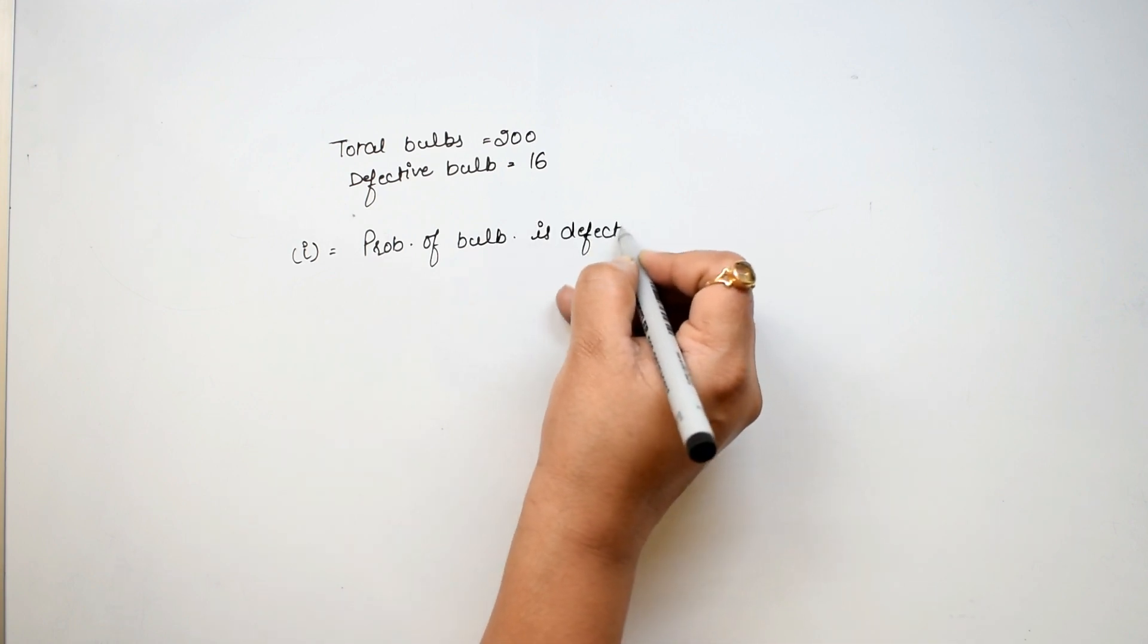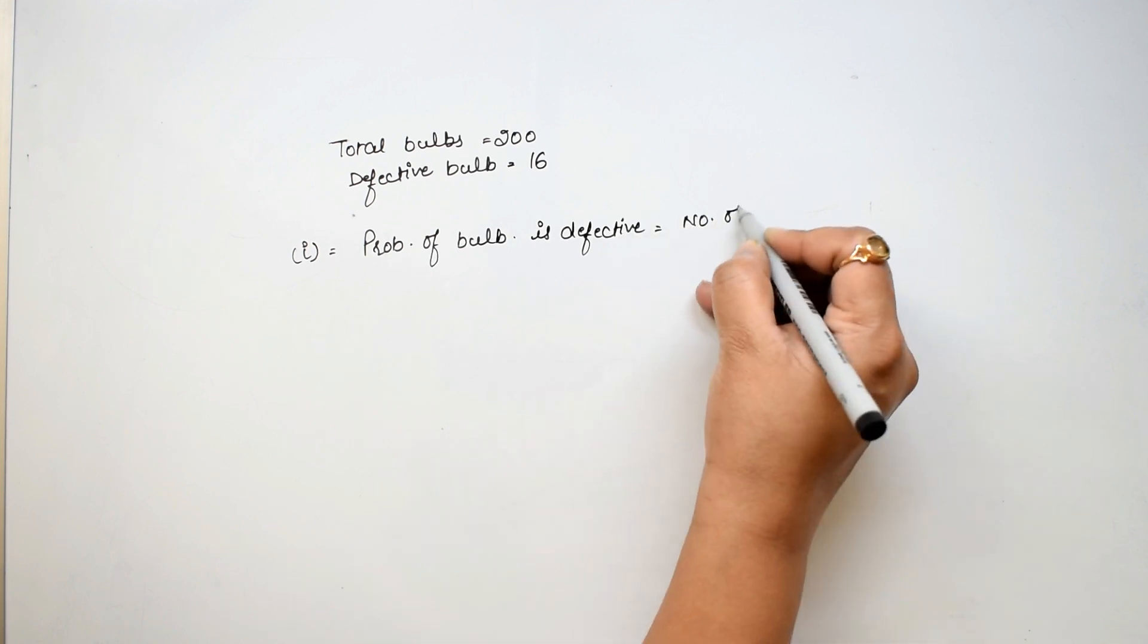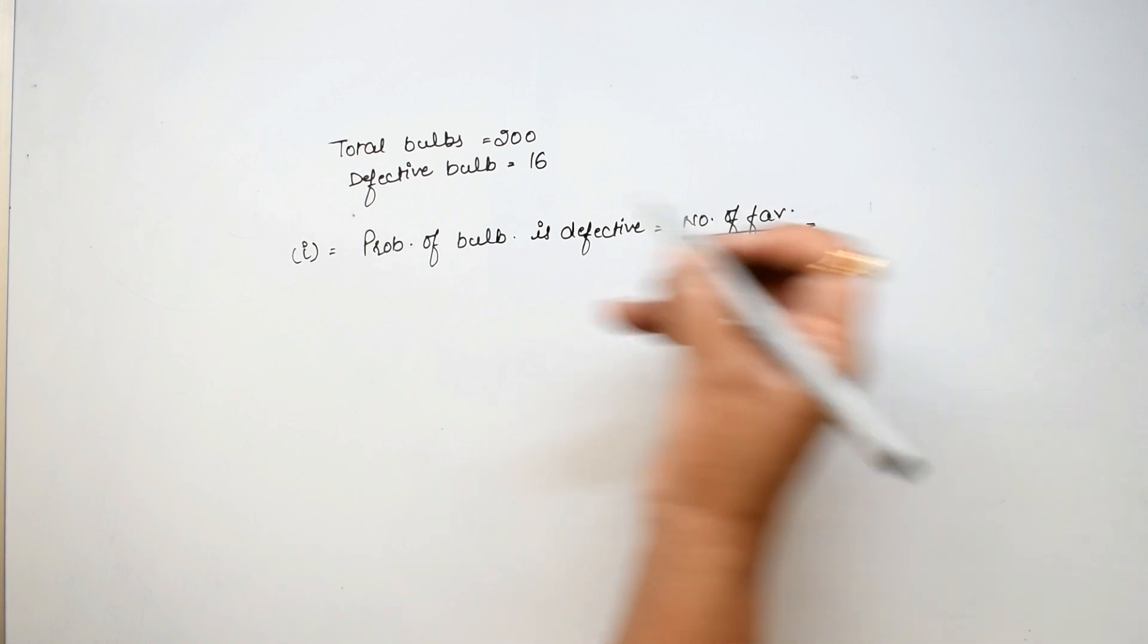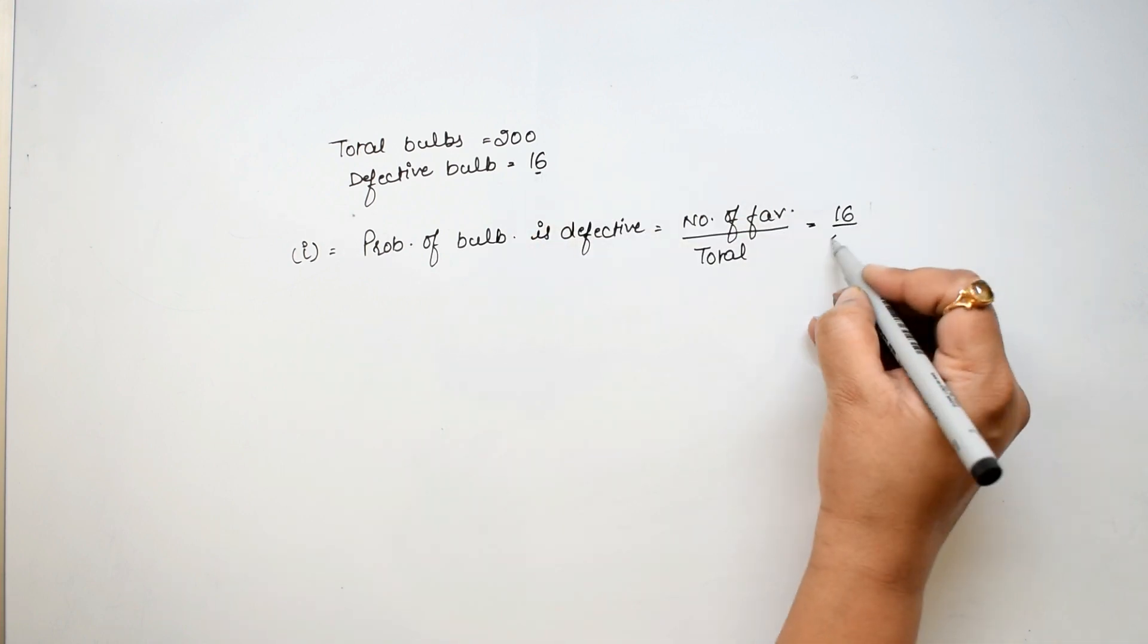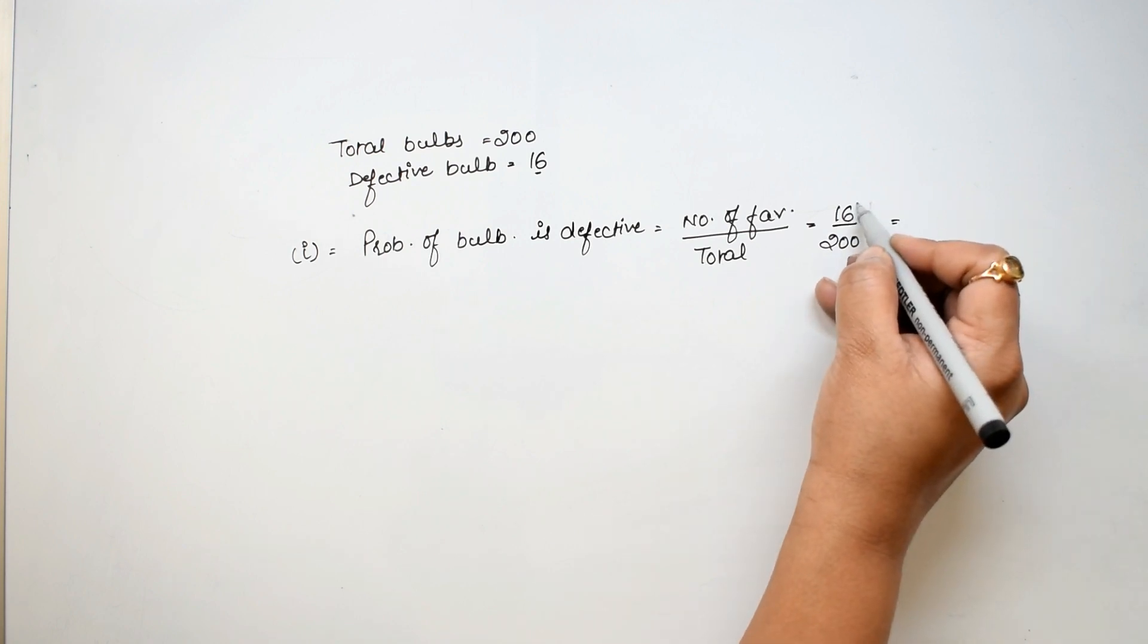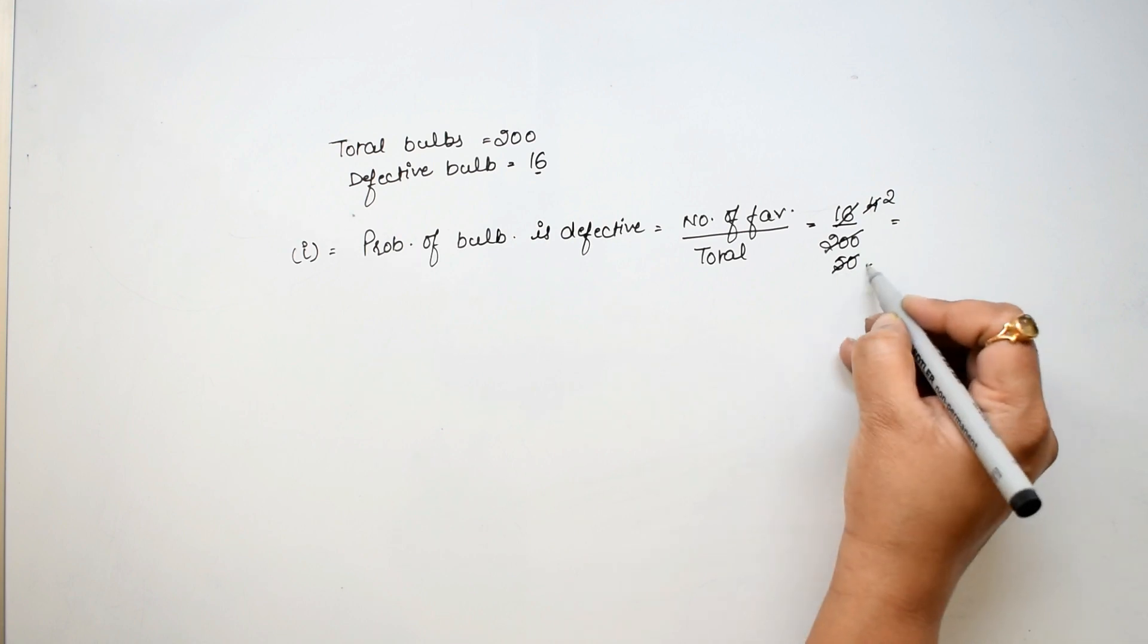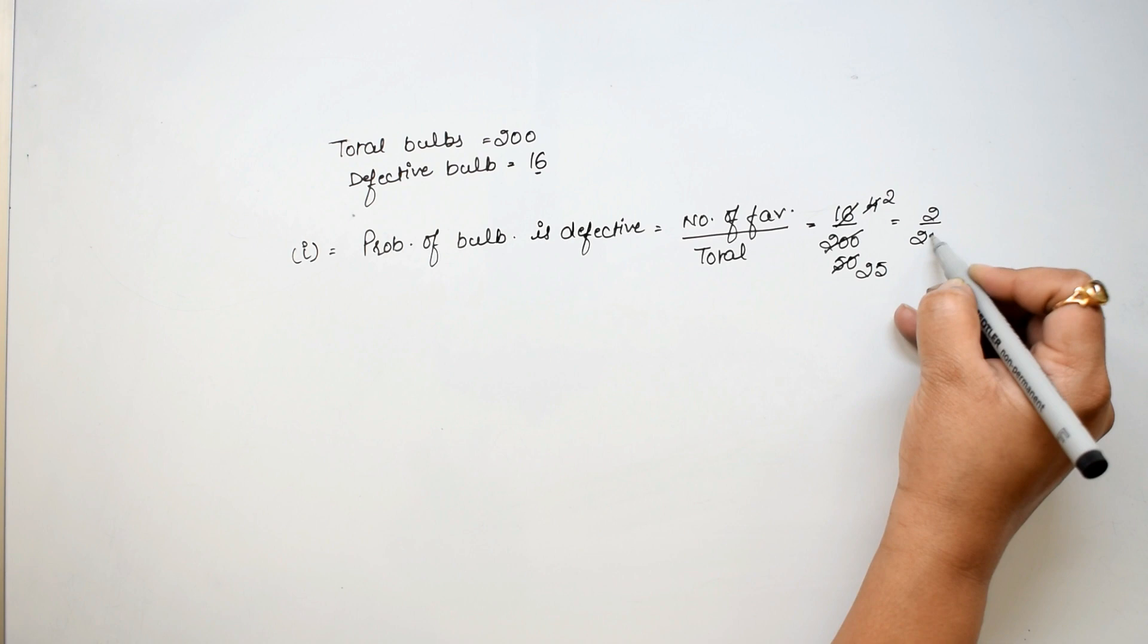The probability of the bulb is defective is the number of favorable divided by total. The number of favorable is 16, we know is defective, and the total is 200. So we can cancel this. 4 times 4 is 16, 4 times 5 is 20. 2 times 2 is 4 and 25. So the probability is 2 upon 25.